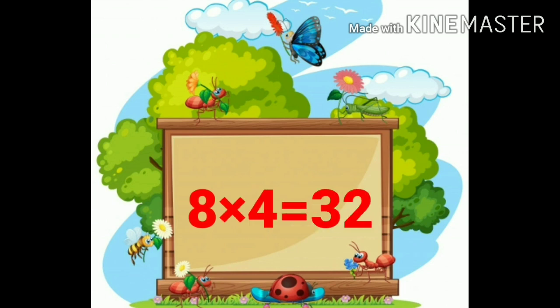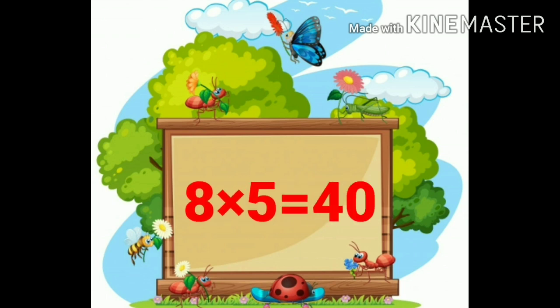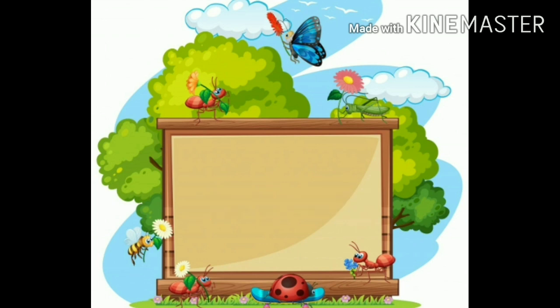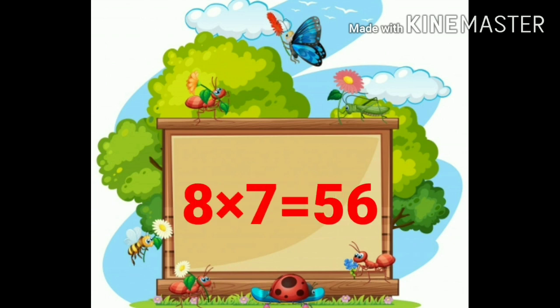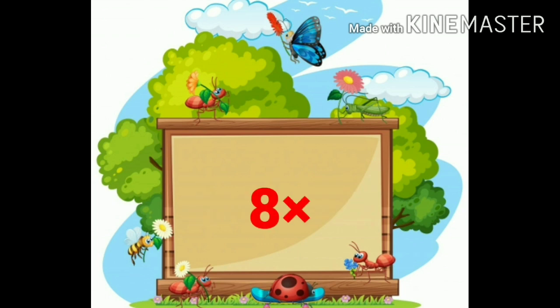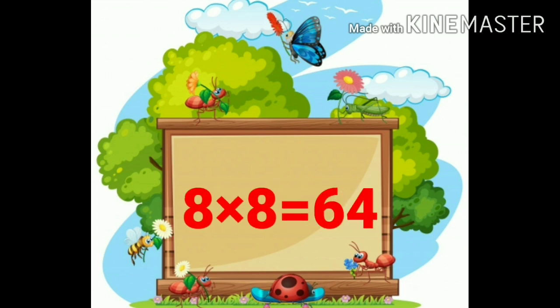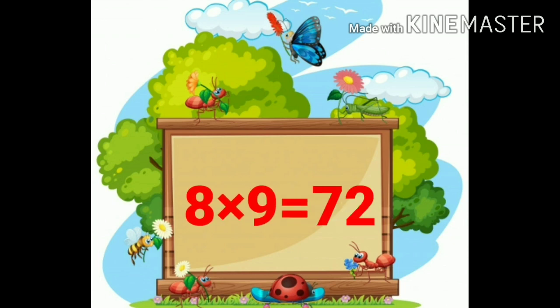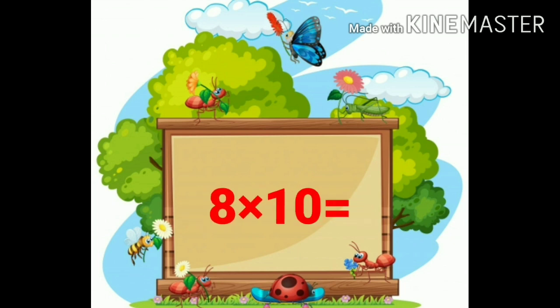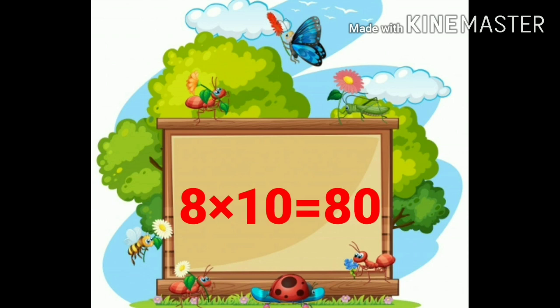Eight fours are thirty-two. Eight fives are forty. Eight sixes are forty-eight. Eight sevens are fifty-six. Eight eights are sixty-four. Eight nines are seventy-two. Eight tens are eighty. Again we learn multiplication table of 8.